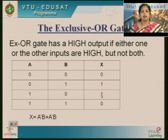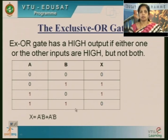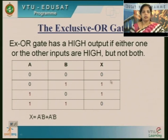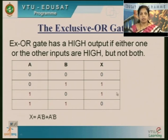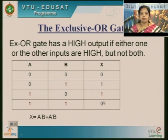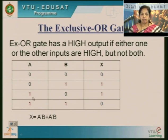You get output 1 if and only if either of the inputs is 1, but not both. Both need not be 1, and both need not be low. If either of the inputs is 1, my output will be logic 1. Writing the equation for this truth table, considering only the logic 1 outputs, we get A complement B and A B complement. The final expression for XOR gate is A complement B plus A B complement.